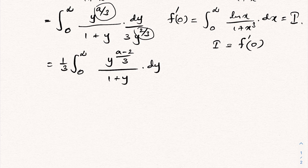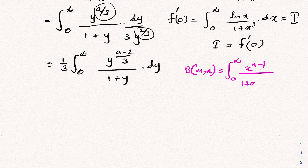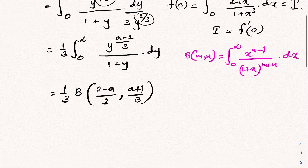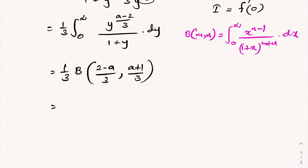We know the beta function: beta(m, n) equals the integral from 0 to infinity of x to the n minus 1 over 1 plus x to the m plus n, dx. We can identify m and n, and therefore we have beta of (2 minus a)/3 comma (a plus 1)/3. Using the relation beta(m, n) equals gamma(m) times gamma(n) over gamma(m plus n), we get gamma of (2 minus a)/3 times gamma of (a plus 1)/3 over gamma(1).